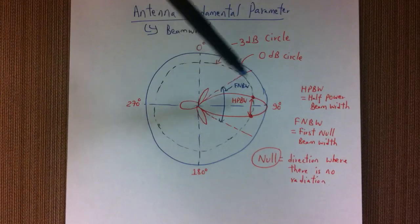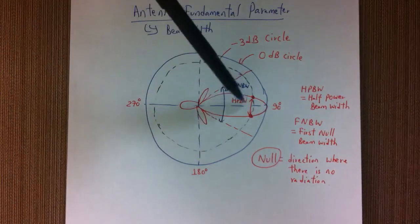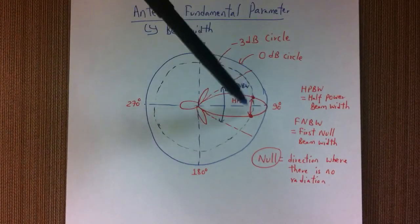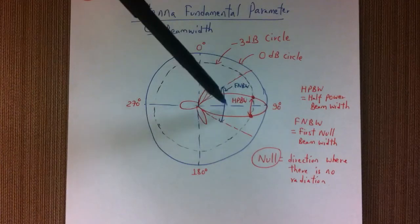And this is usually bigger than your half power beam width. These are measured in degrees, so suppose this is 30 degrees, then this could be 50 degrees.